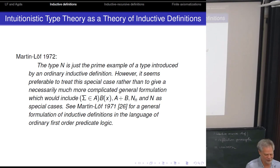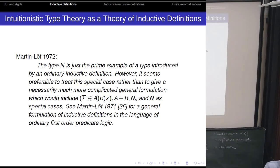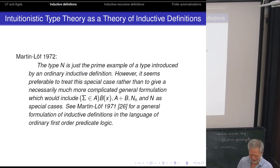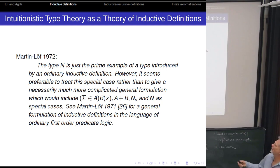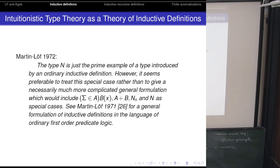Let's get to the question of inductive definitions. Here is a quote indicating that very early on, Martin-Löf thought about his type theory as a general theory of inductive definitions: 'The type N is just a prime example of a type introduced by an ordinary inductive definition. However, it seems preferable to treat this special case rather than to give a necessarily much more complicated general formulation.' He had formulated inductive definitions in predicate logic and thought he could do that for dependent type theory too — but wisely chose to get the basic rules in place first. It took between 1972 and 1986 until he felt the theory was just as he wanted, and then people started developing the theory of inductive types.